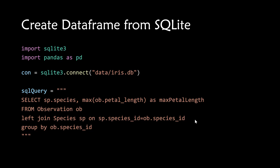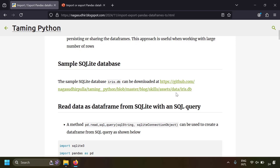Alright, let's get started. The first thing is how to create a DataFrame from an SQLite query. To connect to an SQLite database you need a connection object — use the SQLite3 module and write `sqlite3.connect()` with the file path of the SQLite database. Here the file path is `data/iris.db`. You can download this iris.db SQLite file from the link given in the blog post. I will also give the link to this iris.db file in the description so you can download it for practicing.